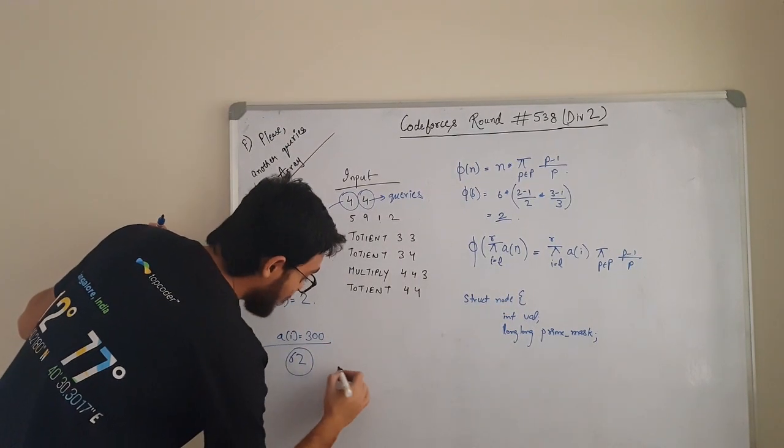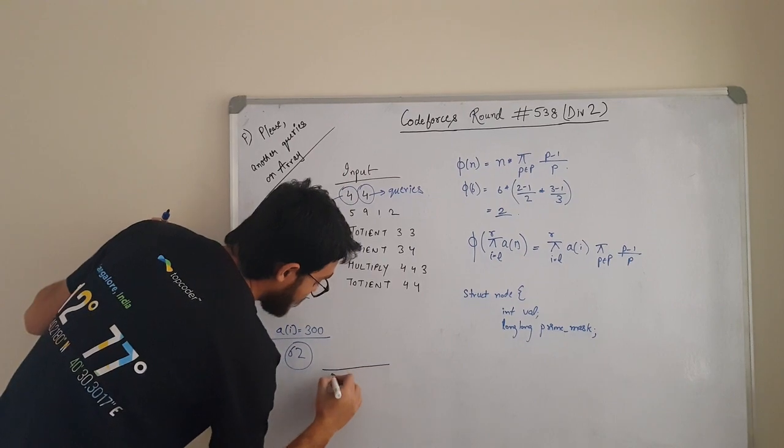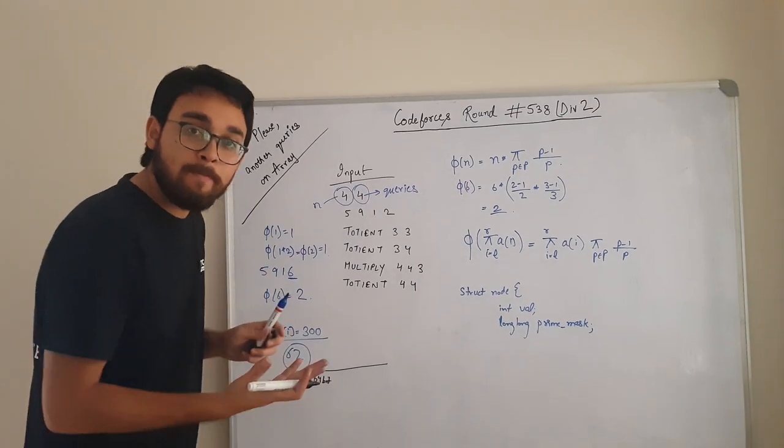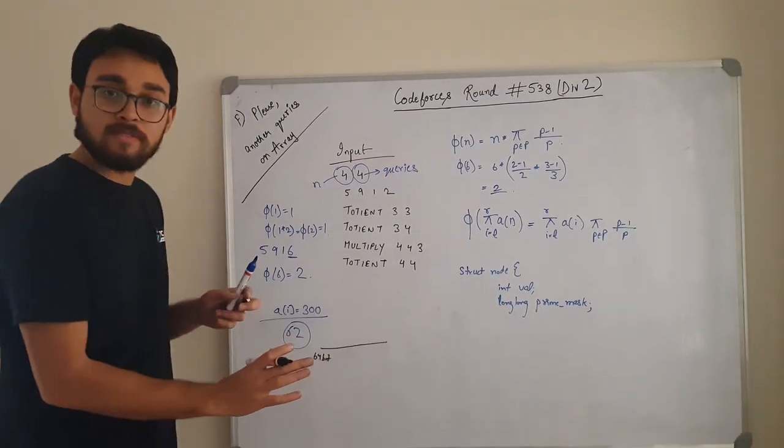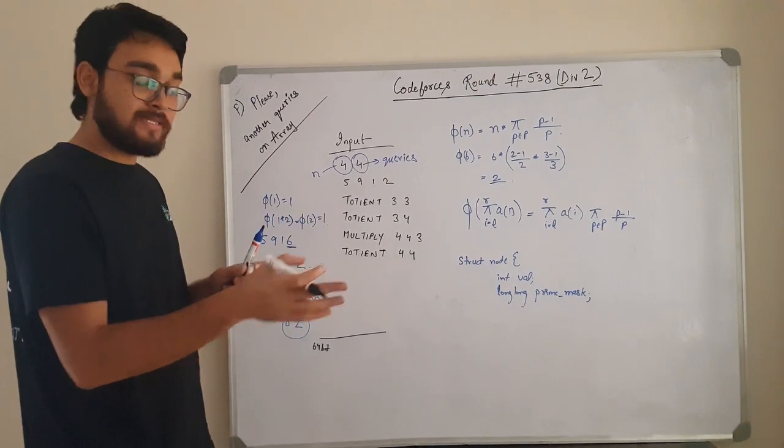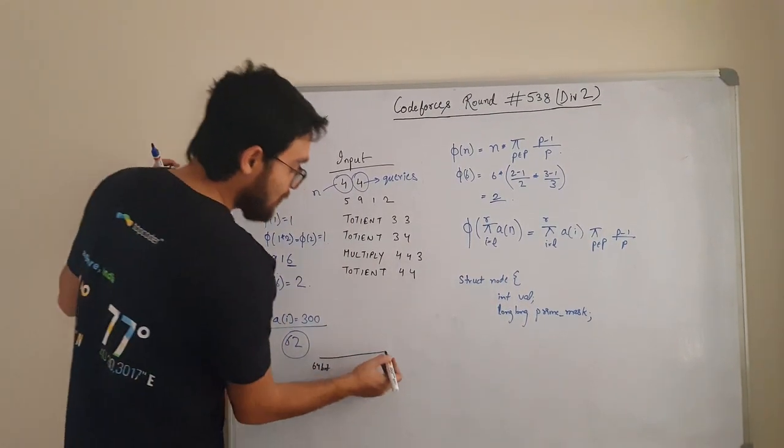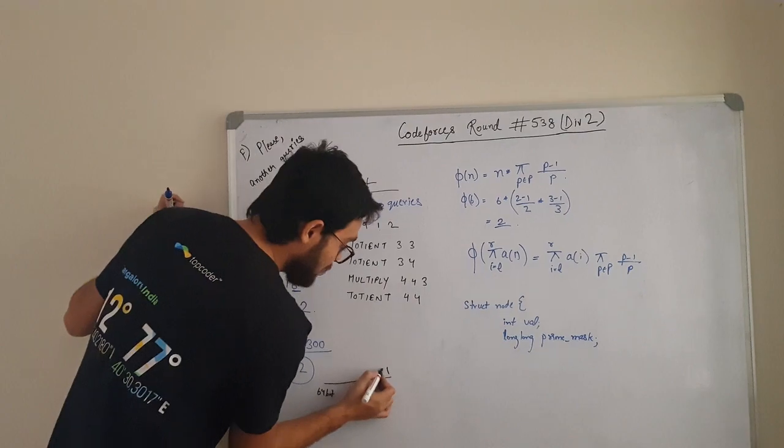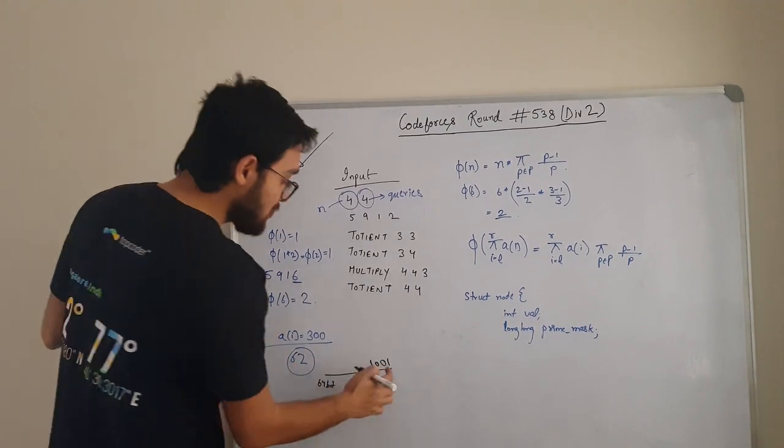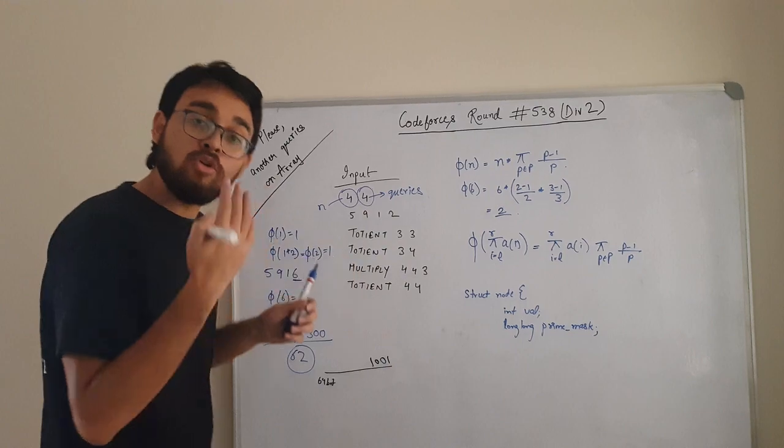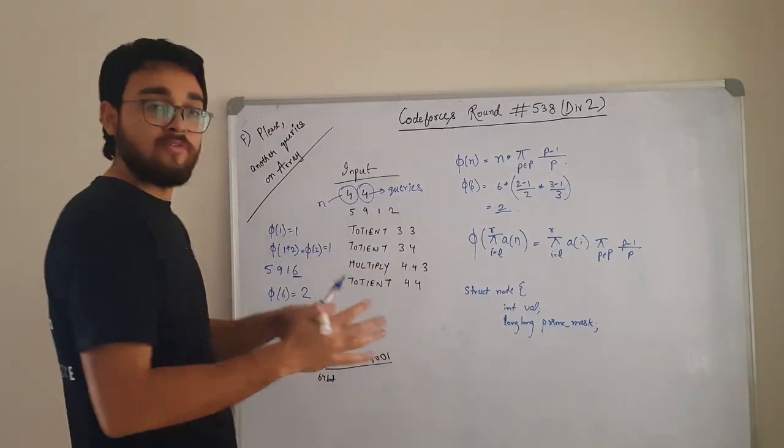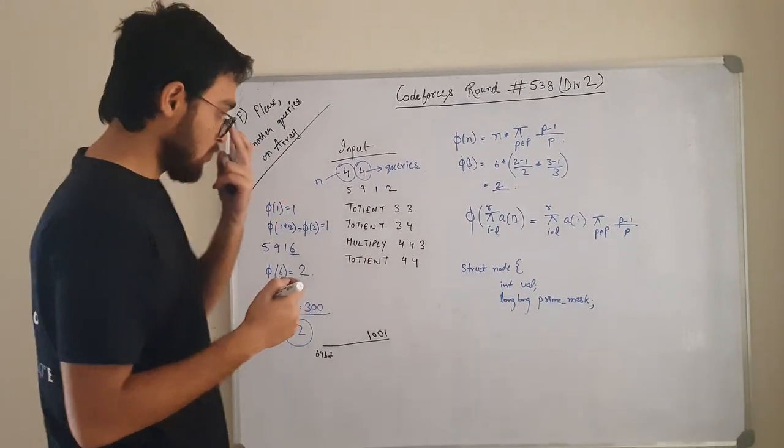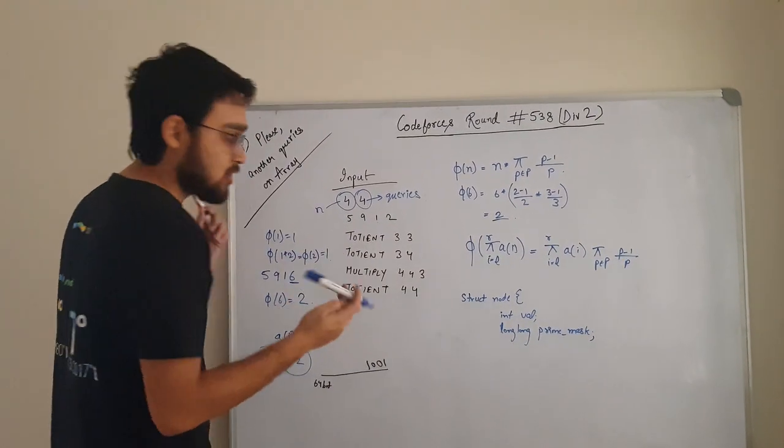Your prime mask is going to be a 64 bit number. Say I have calculated all the primes, all the 62 primes, and I have given the first prime index 0, the second prime index 1. Similarly, if my 0th bit is set, that means the first prime is present in this number. If this is 0, this is 0, then again this is 1, that means first, second, third, fourth prime is there in my number. Likewise, we can store that whole information about the primes in just one long long integer. This is going to be the structure of the node.